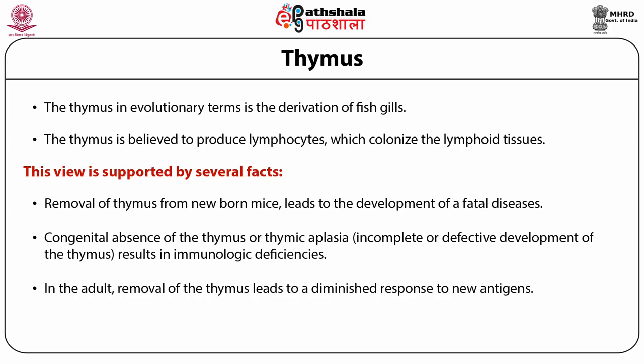In the adult, removal of the thymus leads to a diminished response to antigens. The thymus produces a hormone called thymic humoral factor, THF. This factor is believed to regulate lymphopoiesis in the thymus and other lymphoid tissues.